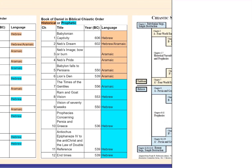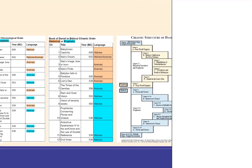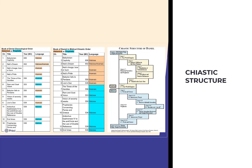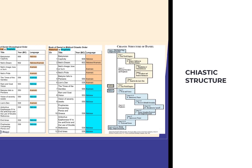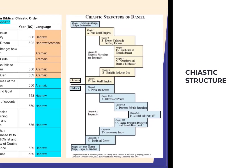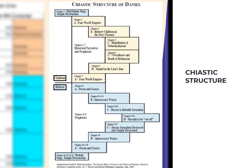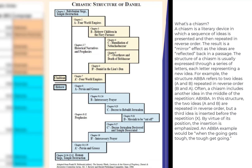I probably should have learned this in high school English but I did not. A chiastic structure is one that shows a very interesting pattern. A chiasm is a literary device in which a sequence of ideas is presented and then repeated in reverse order.